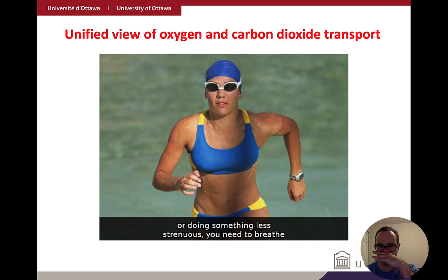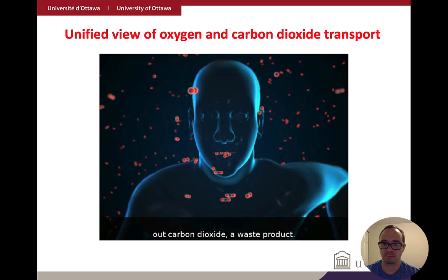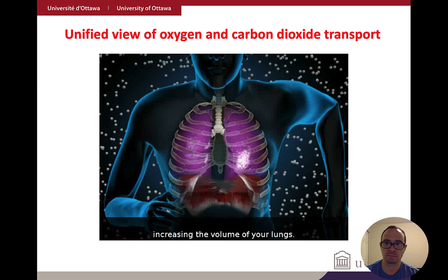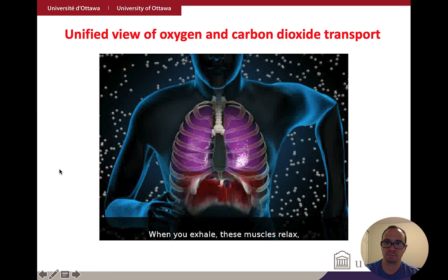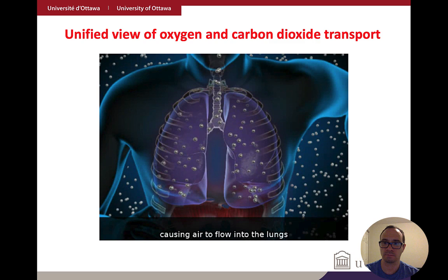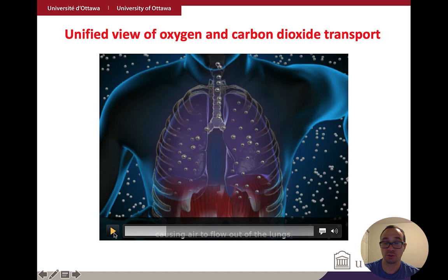Whether you're racing in a triathlon or doing something less strenuous, you need to breathe in oxygen to help you get energy and breathe out carbon dioxide, a waste product. When you inhale, your diaphragm and rib muscles contract, increasing the volume of your lungs. When you exhale, these muscles relax, decreasing the volume. When the lungs expand, air pressure drops, causing air to flow in. When lung volume decreases, air pressure increases, causing air to flow out. All of this is referred to as ventilation.